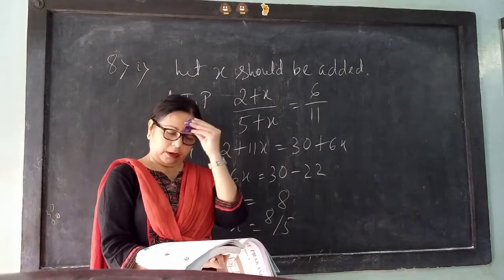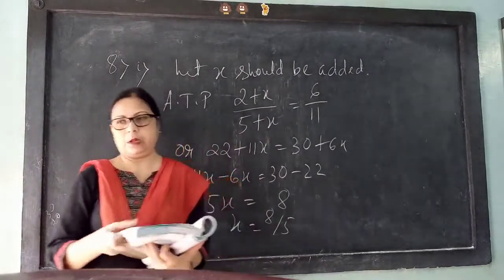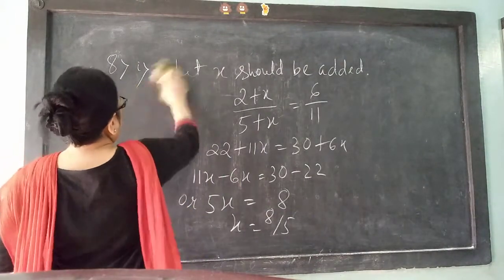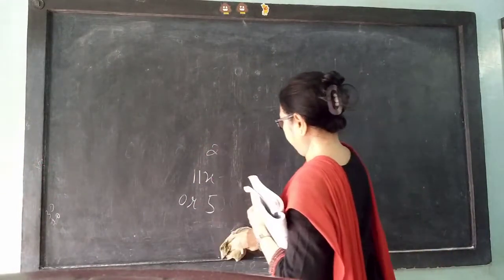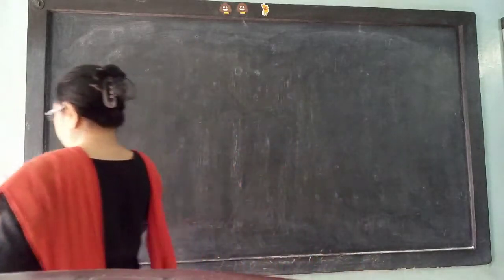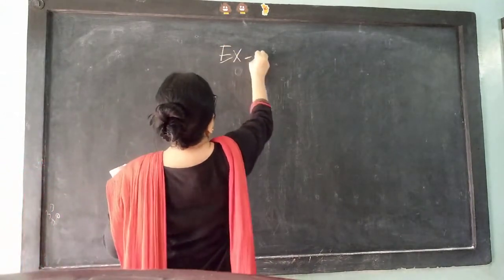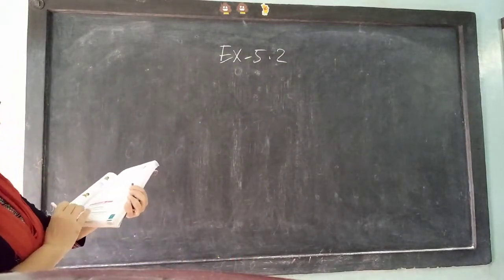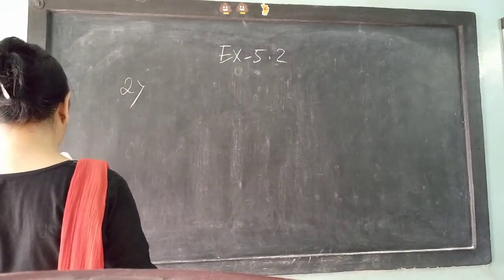In class 8 also you have done how to calculate the third proportional, fourth proportional, and mid proportional — again I am doing that. Exercise 5.2: Find the fourth proportional of the following. How to find out the fourth proportional — I am doing sum number 4.